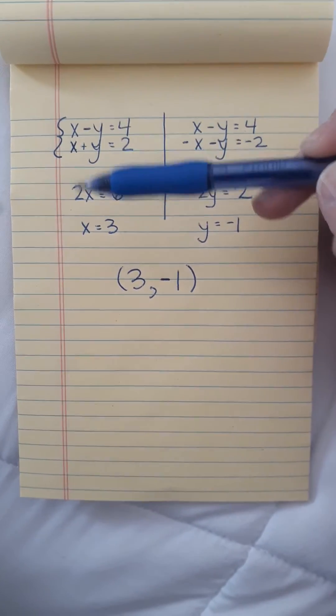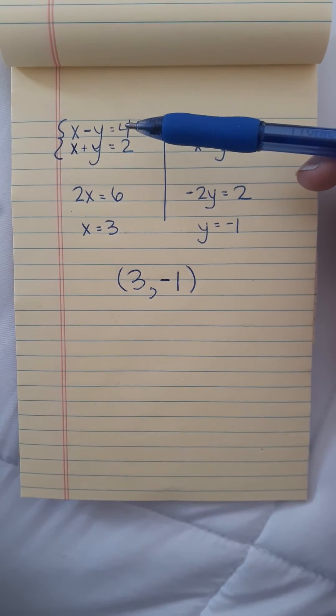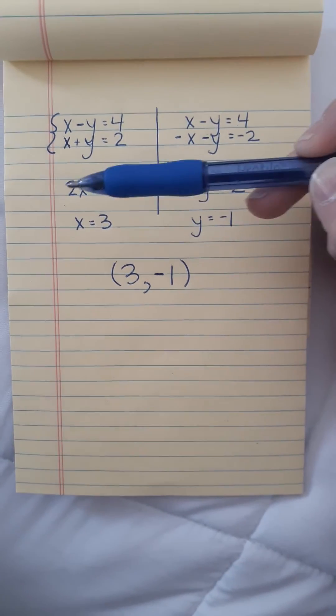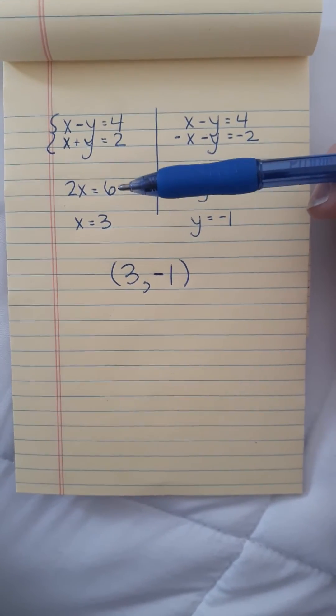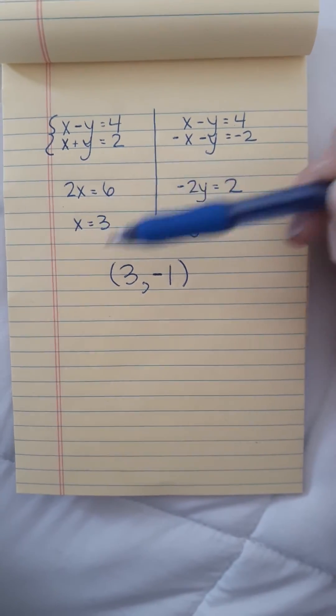So I'm left with two x's, and 4 plus 2 gives me 6. So I've got 2x equals 6. Then I divide 2 off both sides and get x equals 3.